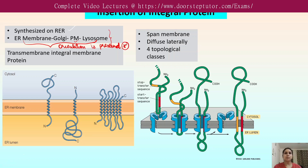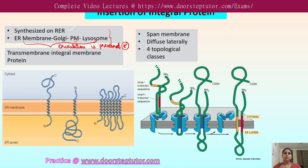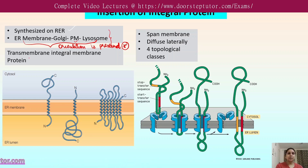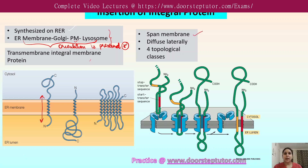During the transportation of the integral membrane protein, the orientation does not get disturbed; it is preserved as the protein is transferred to its particular location. It can be called a transmembrane integral protein — 'trans' means across — so it is present across the membrane and usually spans the membrane on which it is located.